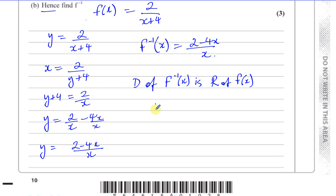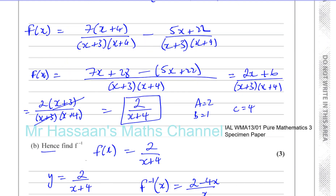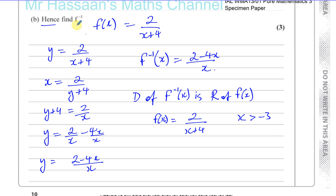Most students just find the inverse algebraically and think they're finished, but one of the marks is also for stating its domain. The original function f of x equals 2 over x plus 4, with x being a real number and x greater than minus 3. We must also state the domain of the inverse function because the restricted domain of the original affects it. So let's draw the original function to find its range.